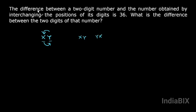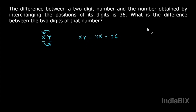It is given that the difference between the original number and the number obtained when we interchange the digits is 36. So xy minus yx will be equal to 36. We need to find the difference between the digits of that number.